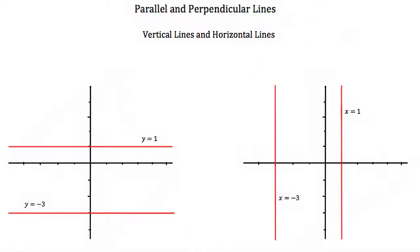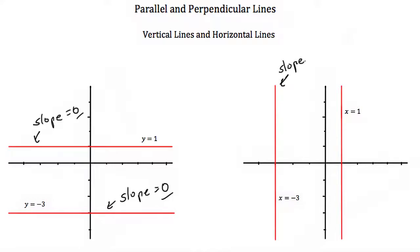Now, it's a special case of parallel lines. Here we have two horizontal lines, and if you know your horizontal lines, you know that they have a slope of 0. So both of these horizontal lines have a slope of 0, so their slopes are equal. Now, vertical lines, however, have an undefined slope. So it's hard to say that two vertical lines have the same slope, because their slope is undefined. You just have to remember that two vertical lines are always parallel.